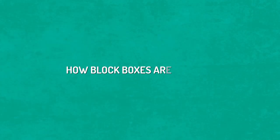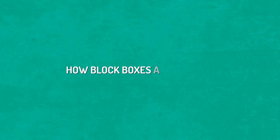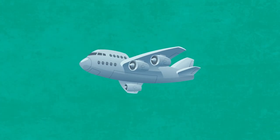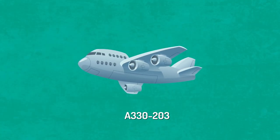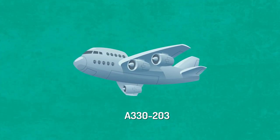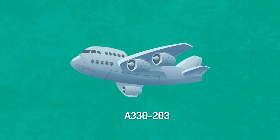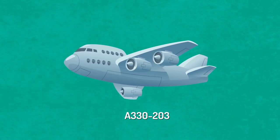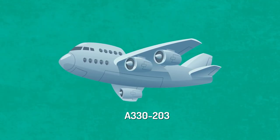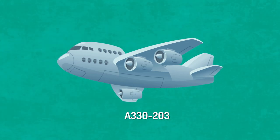Now that we understand how the black boxes work inside the plane, let's take a look at how they're utilized after an airliner crashes, using a specific example: the downing of Air France Flight 447 in the summer of 2009. The monstrous Airbus A330-203 has been nicknamed the Titanic of airplanes — it seemed impossible for a craft to ever fall from the sky like this one did.